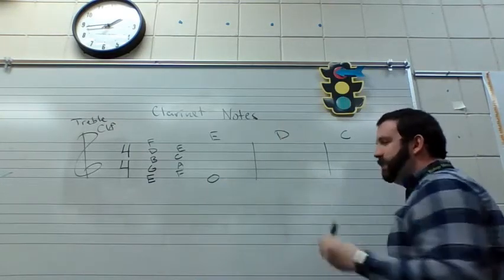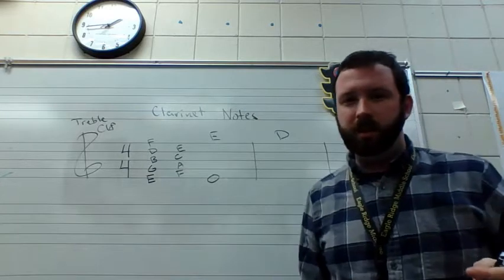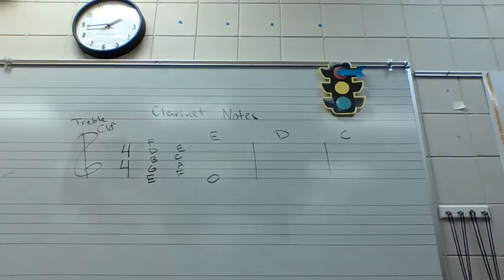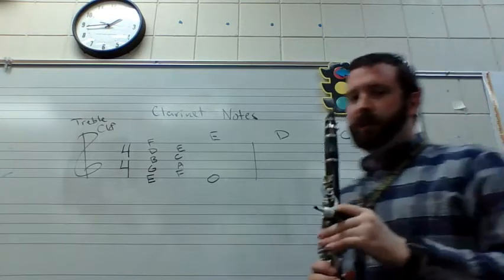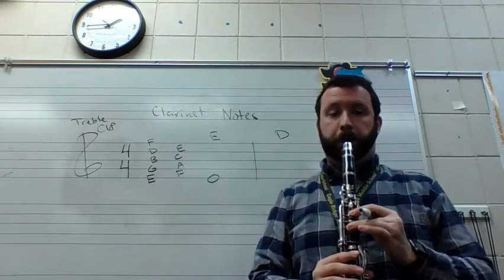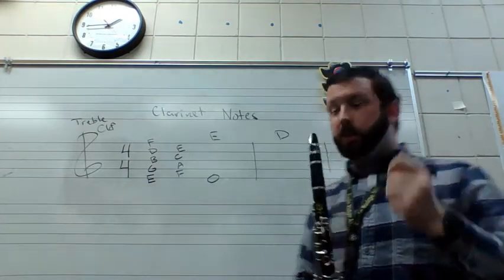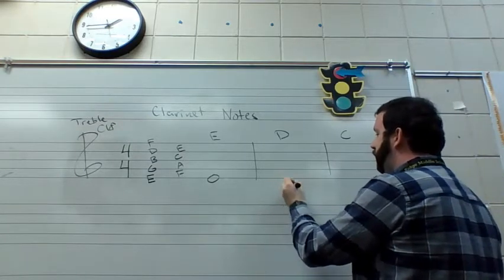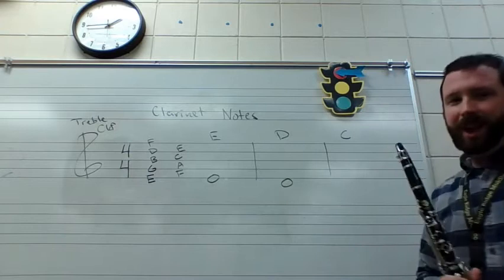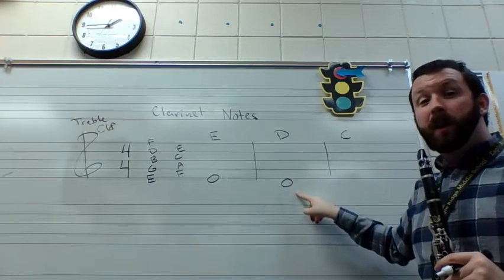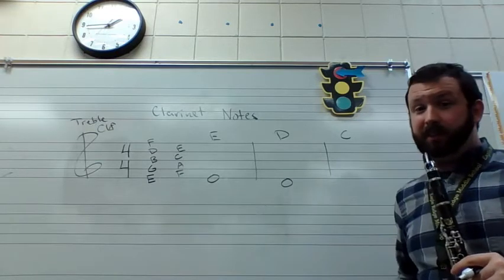Then we have D, and D is a lower note than E. If we play those two notes back to back—here, let me grab my clarinet. Sorry, I should have been prepared before the video. But if I play E and then D, D is a little bit lower than E. So we're going to put D right below E.